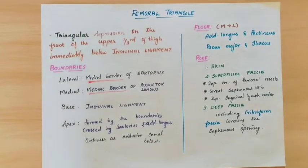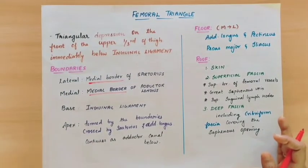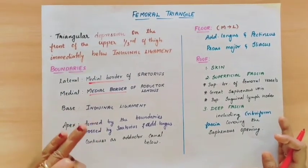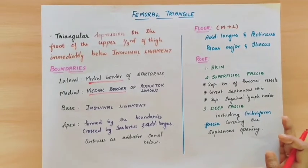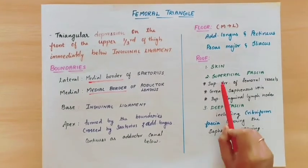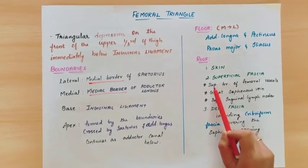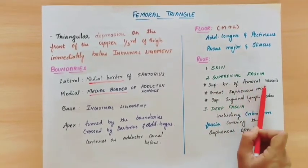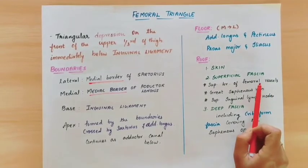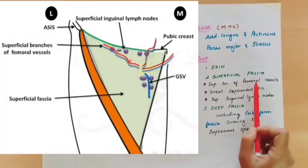Now coming to the roof of the triangle. The roof is made by three layers: skin, superficial fascia, and deep fascia. In the superficial fascia, important structures are present — the first is the superficial branches of the femoral vessels, that is the femoral artery and femoral vein superficial branches.